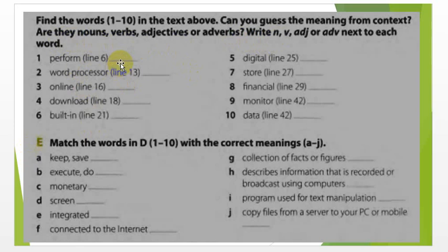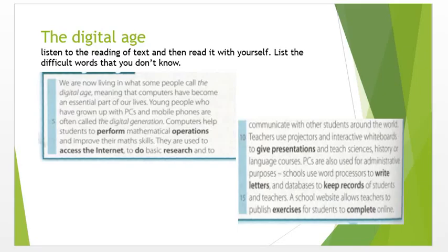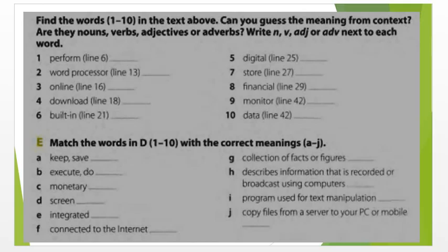For example, here in line number five or six, you can find the word 'perform' very easily. Match the words in D, 1 up to 10, with the correct meaning A to G. For example, 'keep or save' — this one is 'store.' You can do it by yourself as homework.